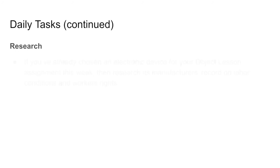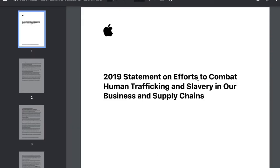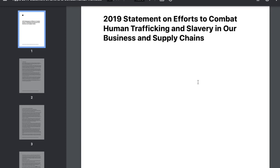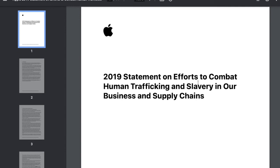One more thing: a bit of on-your-own research. For the object lesson this week, if you've already chosen your electronic device, research its manufacturer's record on labor conditions and workers' rights. If you haven't chosen an object yet, just use your smartphone or computer. For example, I just Googled this and found a 2019 statement by Apple — a report on their efforts to combat human trafficking and slavery in their business and supply chains. It's only 14 pages long and probably has some interesting things. See if you can find anything like that for the manufacturers of your digital object.